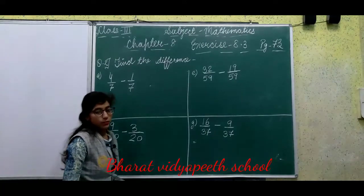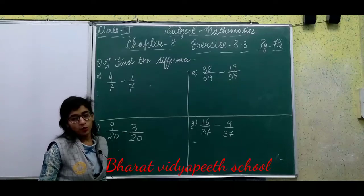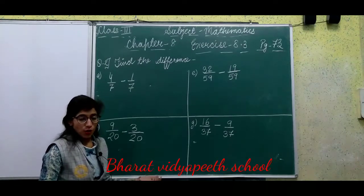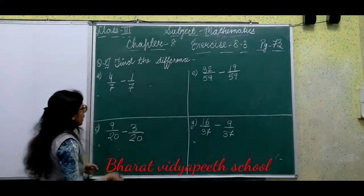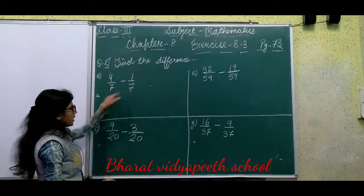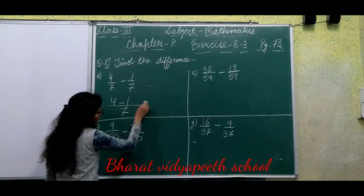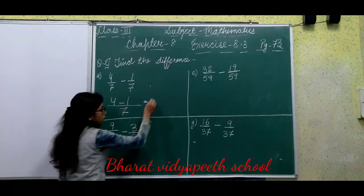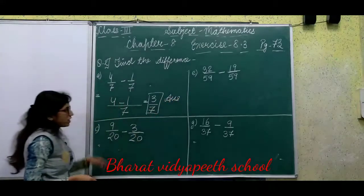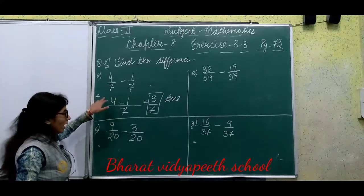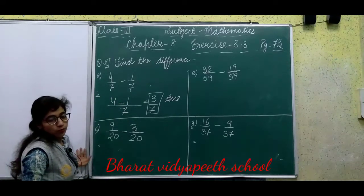Question 2: Find the Difference. In the first question we found the sum by adding. In this question we need to subtract — same procedure. We subtract both numerators and write the answer on the numerator side. The common denominator we mention as it is. Part A: 4 upon 7 minus 1 upon 7. Denominator stays as it is. 4 minus 1 equals 3. So our answer is 3 upon 7. In subtraction we subtract both numerators of like fractions whose denominators are the same. In addition we add both numerators.